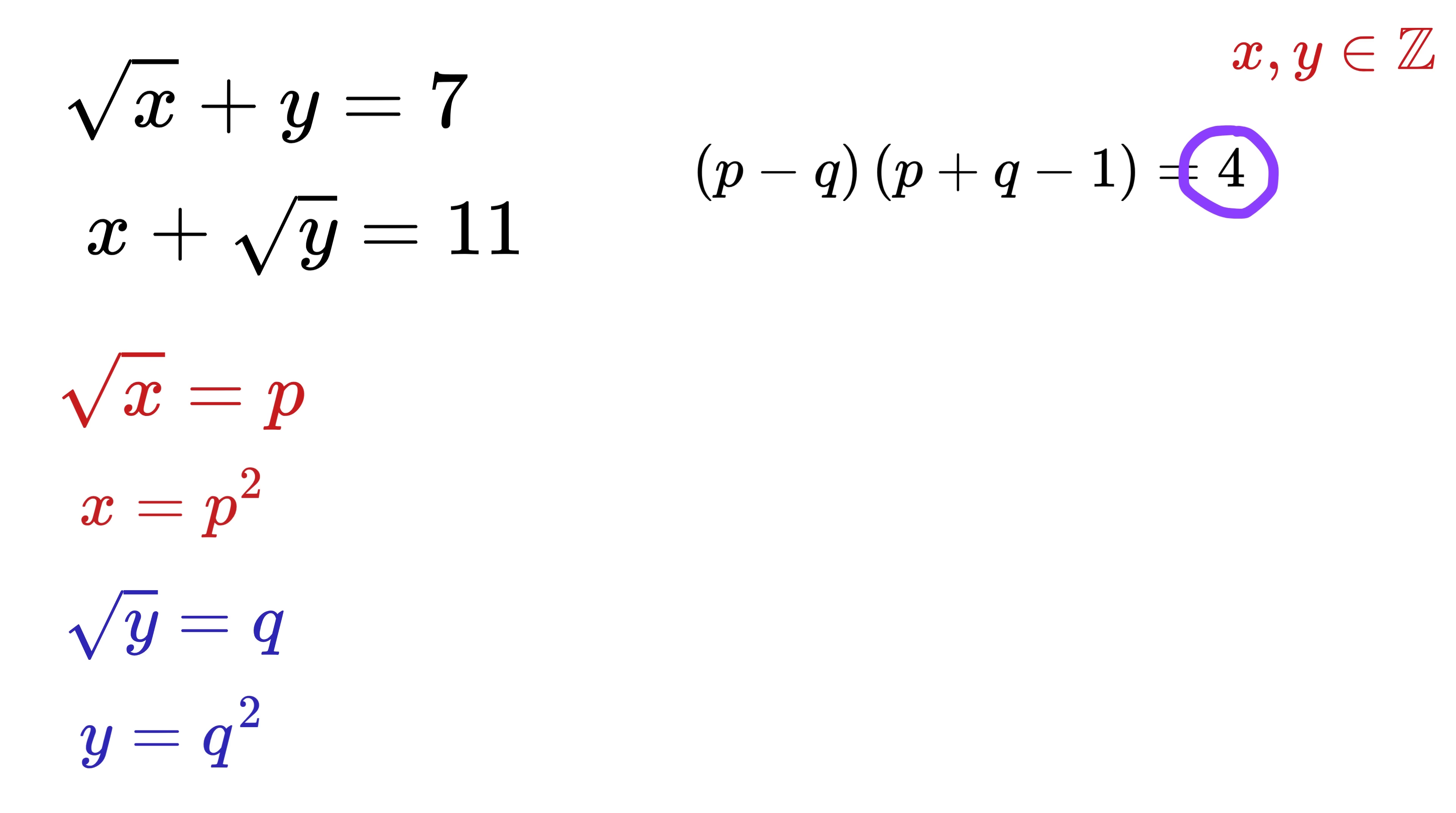Now we can factorize this 4 in three different ways, right? 1 times 4, then 2 times 2, and 4 times 1.